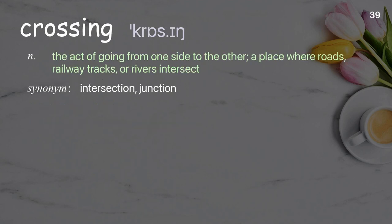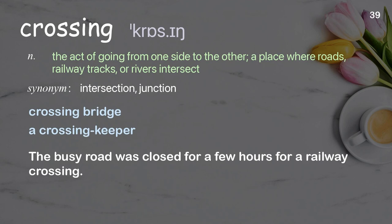Crossing: The act of going from one side to the other; a place where roads, railway tracks, or rivers intersect. Examples: Crossing bridge. A crossing keeper. The busy road was closed for a few hours for a railway crossing.